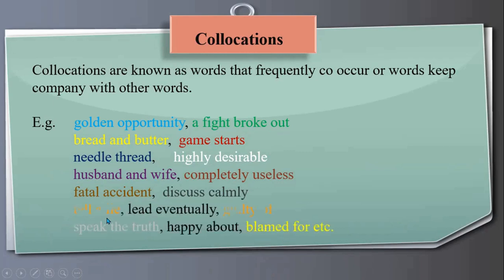More collocation examples: we say 'tell a lie' but 'speak the truth' — we do not say 'tell a truth.' Other collocations include: happy about, blamed for, lead eventually, guilty of. This kind of study — of words that conventionally go together — is called collocations in semantics.